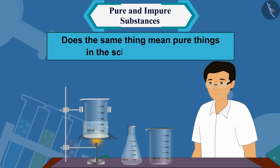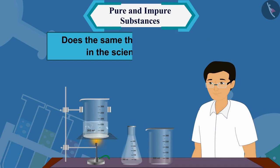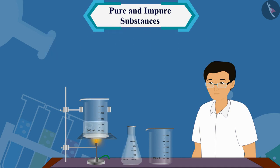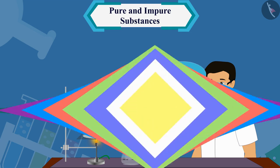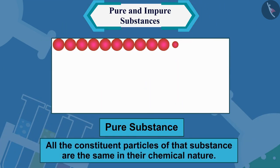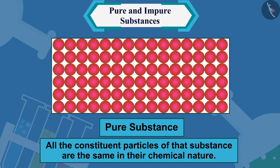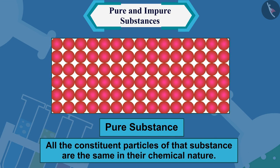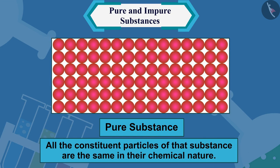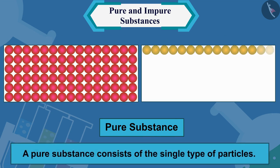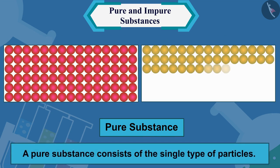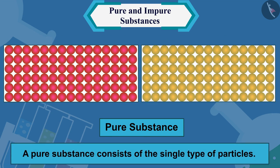But does the same thing mean pure in the scientific definition? No. When a scientist says that something is pure, it means that all the constituent particles of that substance are the same in their chemical nature. A pure substance consists of a single type of particles.